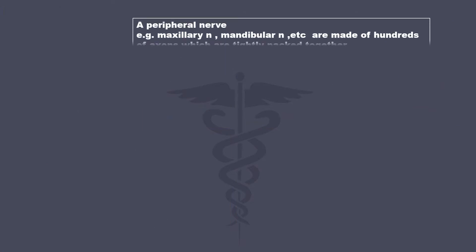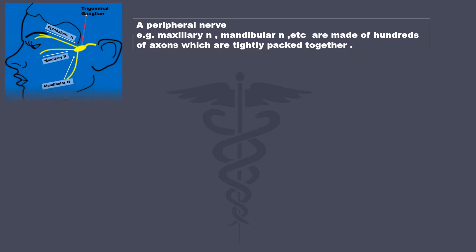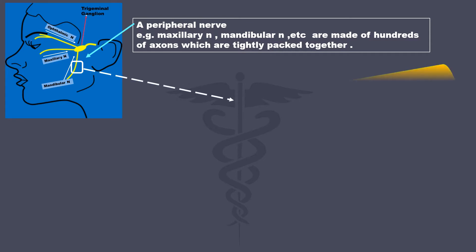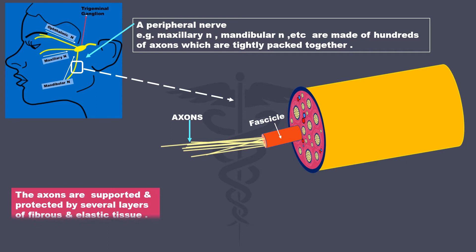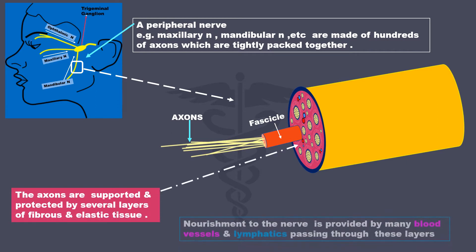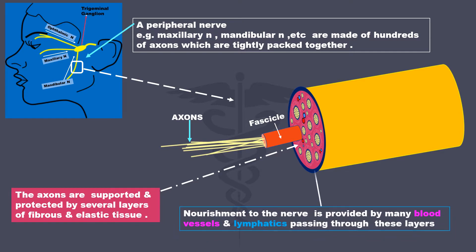A peripheral nerve, e.g. maxillary nerve, mandibular nerve, etc., are made of hundreds of axons which are tightly packed together. If you take a small section of the nerve, this is how it looks inside. These are the axons inside a fascicle or bundle. The axons are supported and protected by several layers of fibrous and elastic tissue. Nourishment to the nerves is provided by many blood vessels and lymphatics passing through these layers.